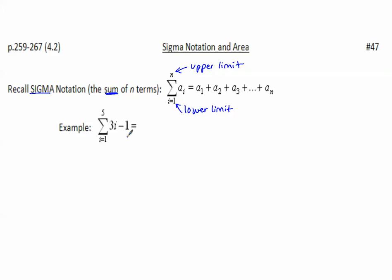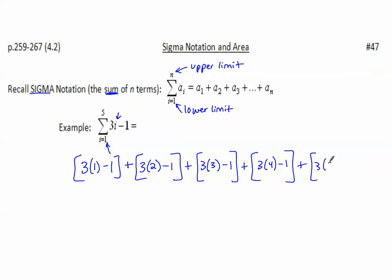For example, we're starting at i equals 1, so that's what we're plugging in first: 3 times 1 minus 1, that'll be our first term. That will get added to the second term, 3 times 2 minus 1, then 3 times 3 minus 1, and so on until we reach the upper limit, which is 5. We simplify this and add it all up, and our final answer is 40.